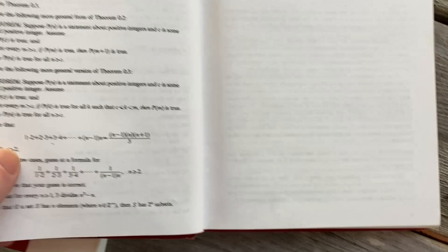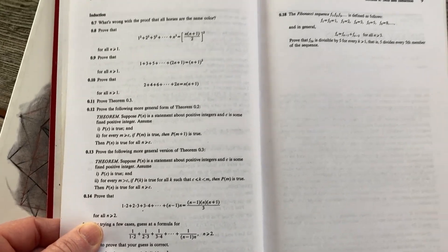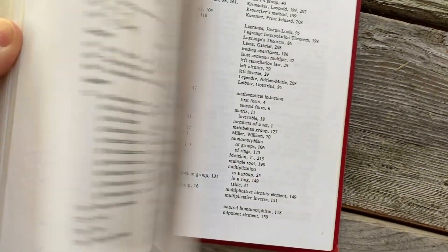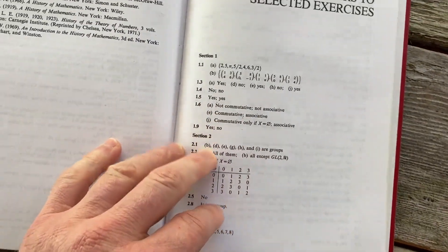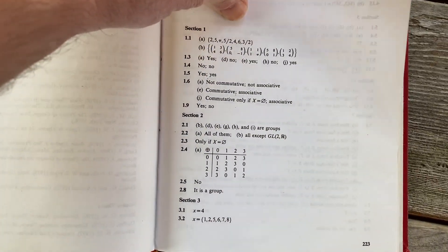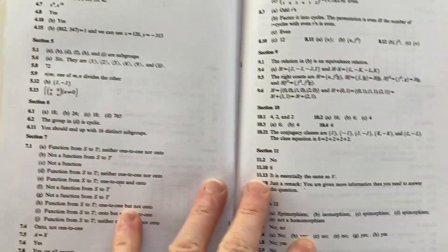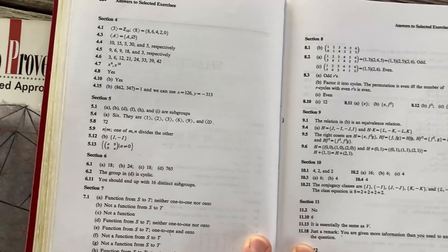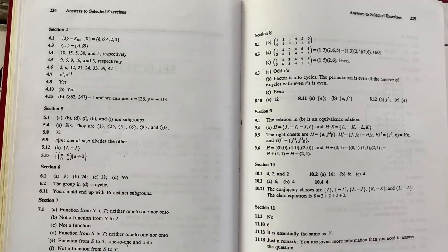You do get answers to only some of the exercises in the back of the book, which is the case with most books on abstract algebra. You don't get a ton in terms of answers, but you do get something. And I think that's always better than absolutely nothing.